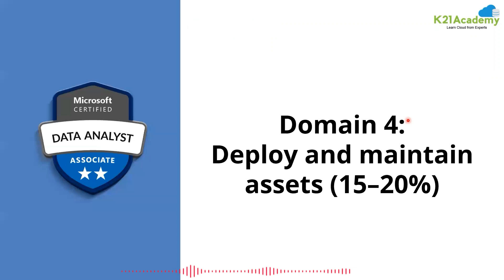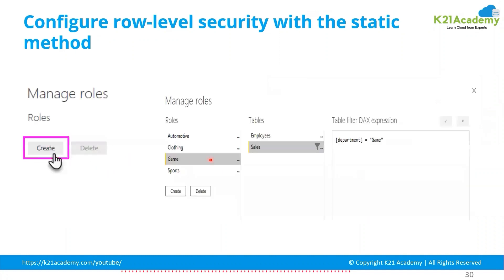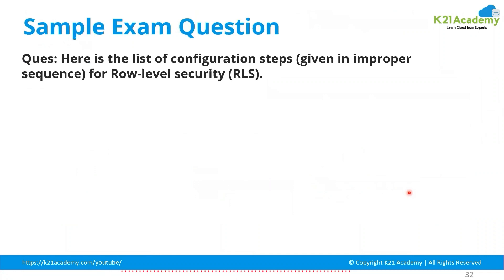The fourth domain is Deploy and Maintain Assets, covering 15 to 20 percent of the exam. This includes Row Level Security (RLS), both static and dynamic methods. With the static method, you go to Manage Roles and manually provide a filter value. With the dynamic method, you use the USERPRINCIPALNAME() function to automatically create dynamic row-level security.